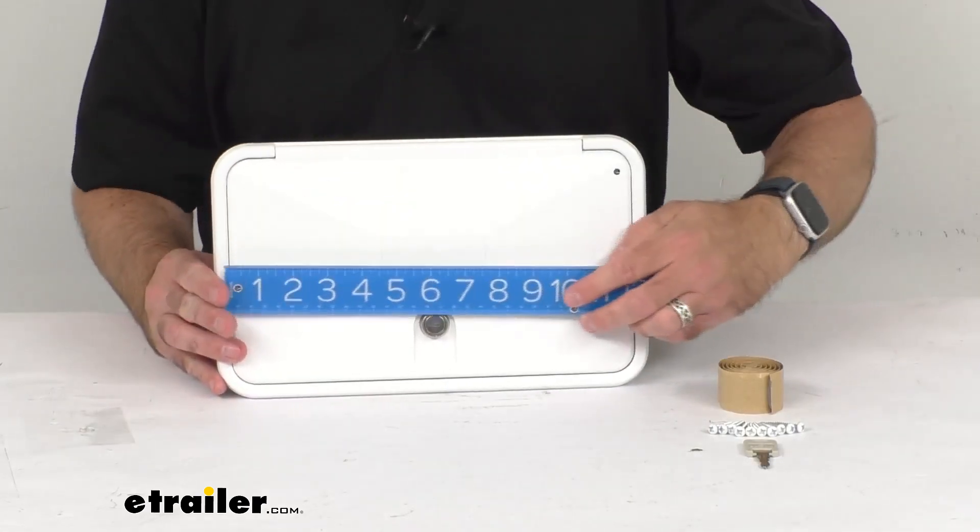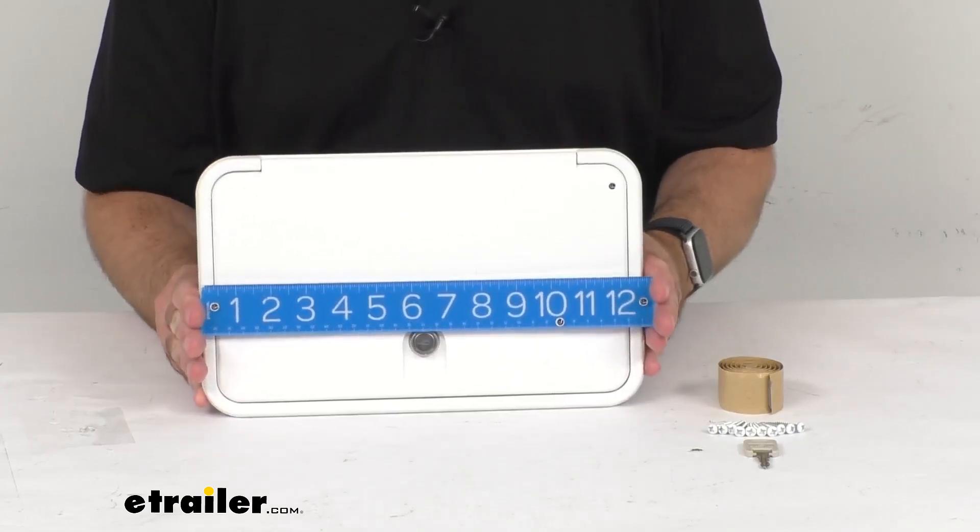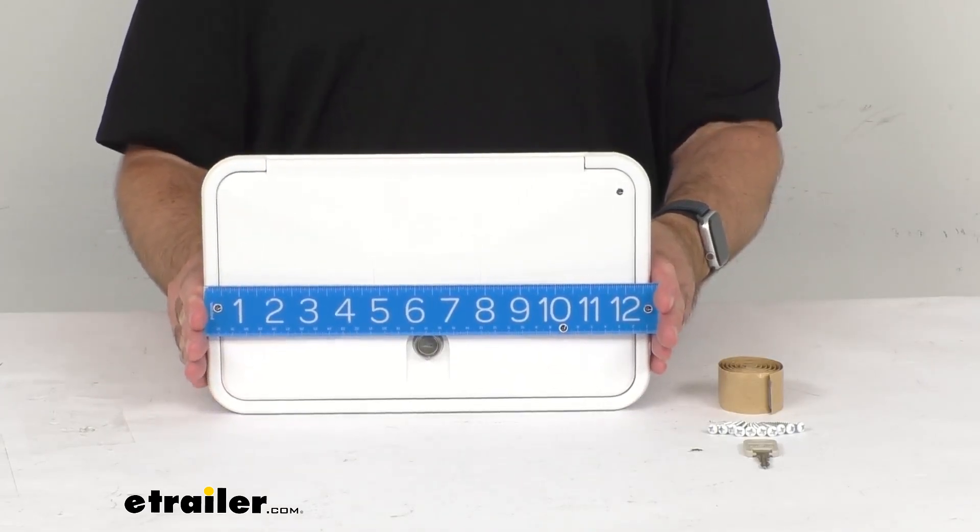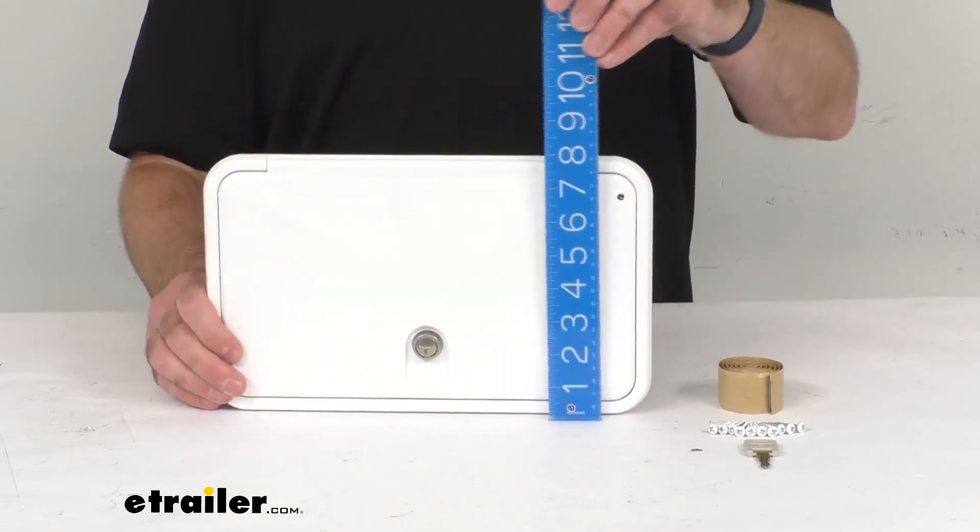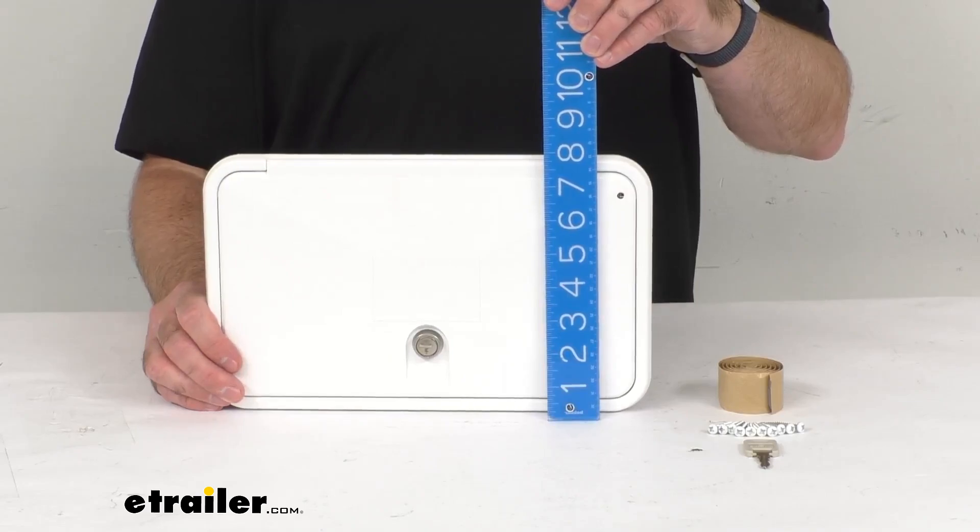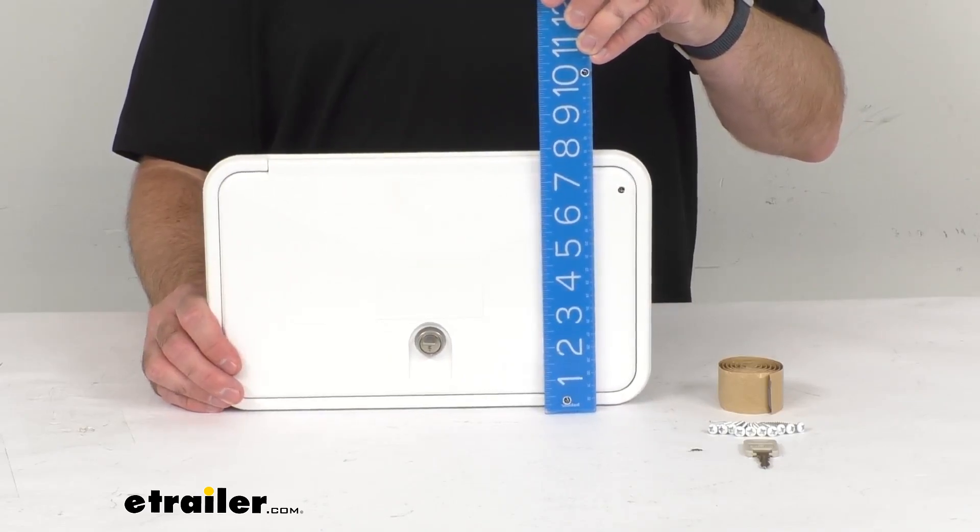so you can be confident this will work for you. Looking at the outside width, we're at 12 5/8 inches end to end, and the height from bottom to top is right at about 7 3/4 inches tall.